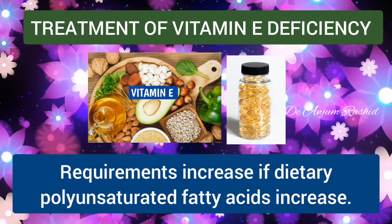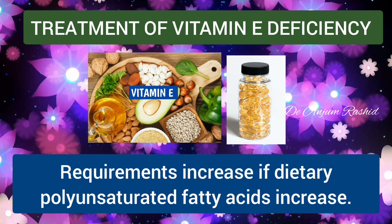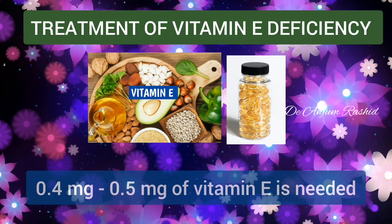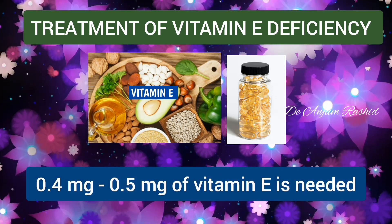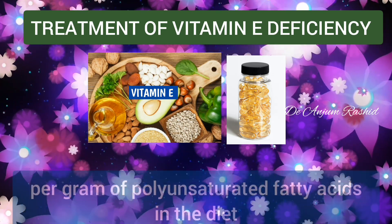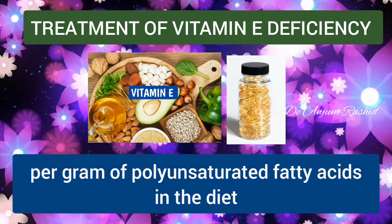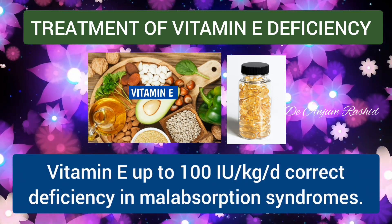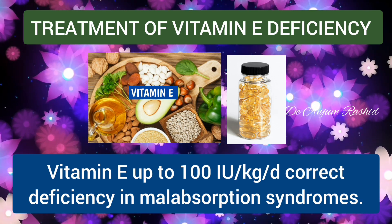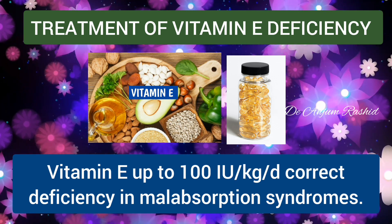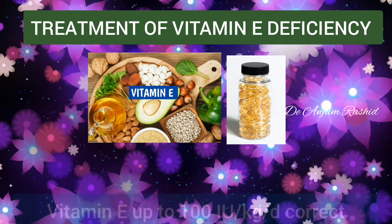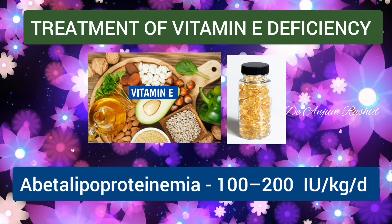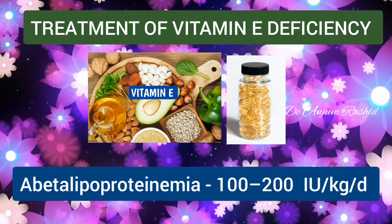It is important to remember that the requirement of Vitamin E increases if dietary polyunsaturated fatty acid intake increases — between 0.4 and 0.5 milligrams of Vitamin E is needed per gram of polyunsaturated fatty acid in the diet. Vitamin E deficiency resulting from malabsorption syndromes requires large oral doses up to 100 IU per kilogram per day. For abetalipoproteinemia, 100 to 200 IU per kilogram per day of Vitamin E are needed.